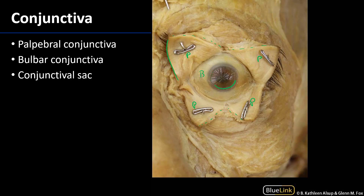These portions of the conjunctiva reflect. There is actually a superior fornix and an inferior fornix — those are the regions where the palpebral conjunctiva reflects to the bulbar conjunctiva. These are contiguous, so if one were to put a contact lens in their eye, it could not move to the posterior portion of the eye. There is a space between the palpebral and bulbar conjunctiva called the conjunctival sac.